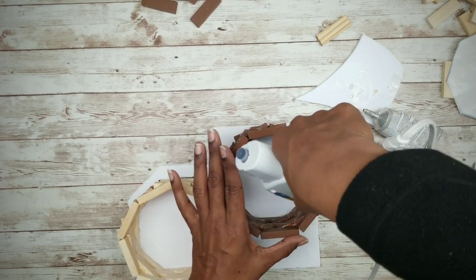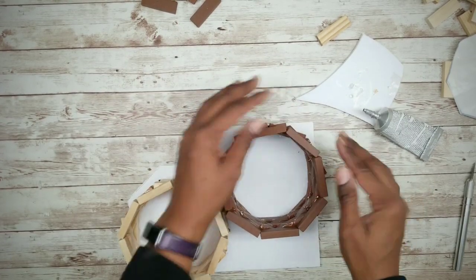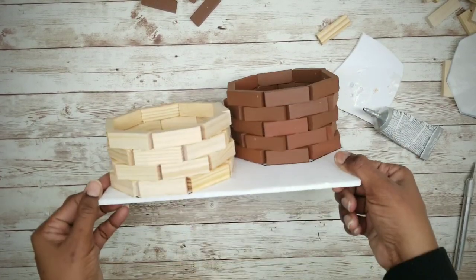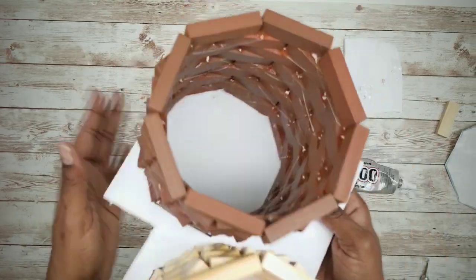And once they are perfectly in place, you want to apply hot glue on the inside where the corners touch. And here are the completely built vases. They will end up being about 9 layers high.